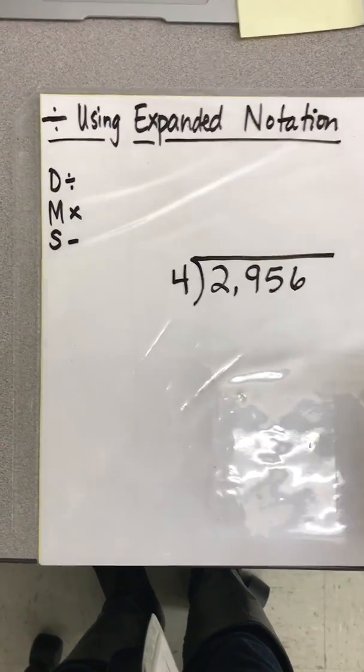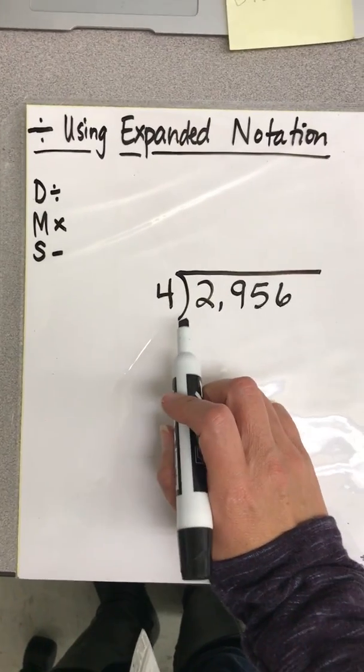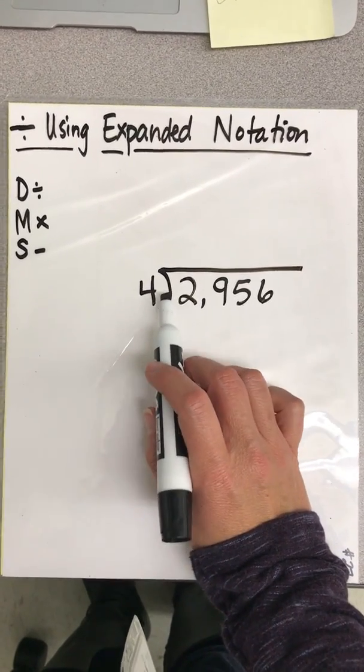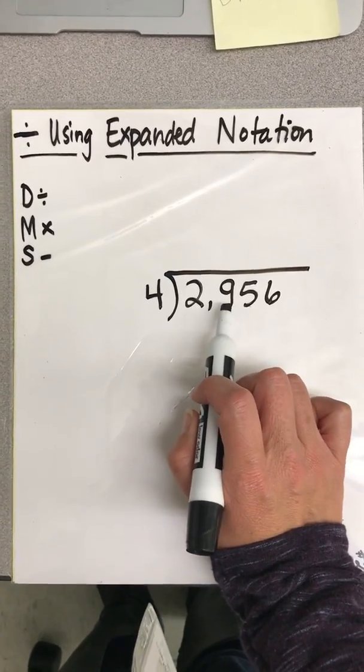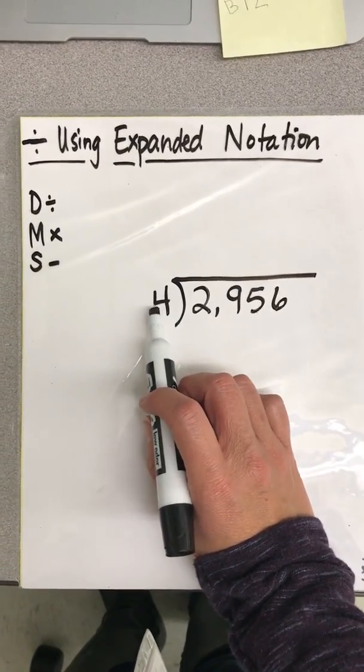And this method is set up a little differently than yesterday. Instead of a rectangle, we're just going to use a traditional long division bar and put the dividend on the inside and the divisor on the outside.